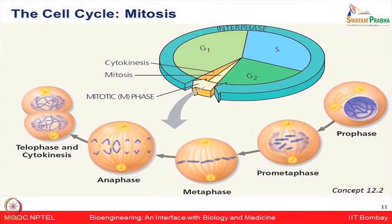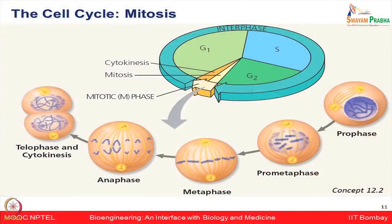Let us have a broad overview of the mitosis process. Thinking about the overall cell cycle, we have the mitotic phase and the interphase. Within the mitotic phase there are different phases: prophase, prometaphase, metaphase, anaphase, telophase, and cytokinesis. Let us go through each one of them in slightly more detail.